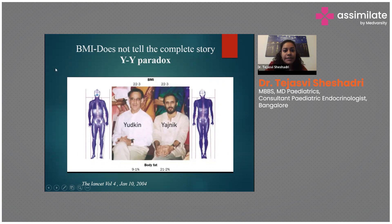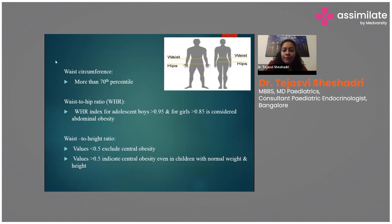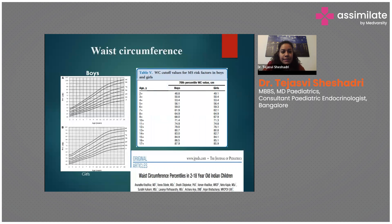That is why body fat assessment is essential, and we use waist circumference and waist-to-hip ratios for children. A waist circumference above the 70th centile, and a waist-to-hip ratio above 0.95 for adolescent boys and above 0.85 for adolescent girls, is considered central or abdominal obesity. The waist circumference chart allows you to plot age against waist circumference to determine if it is above the 70th centile, which is considered abnormal.